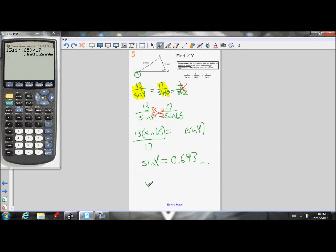So I know angle Y is equal to inverse sine of that answer, of 0.693. So I'm just going to do second sine to get inverse sine of my answer.